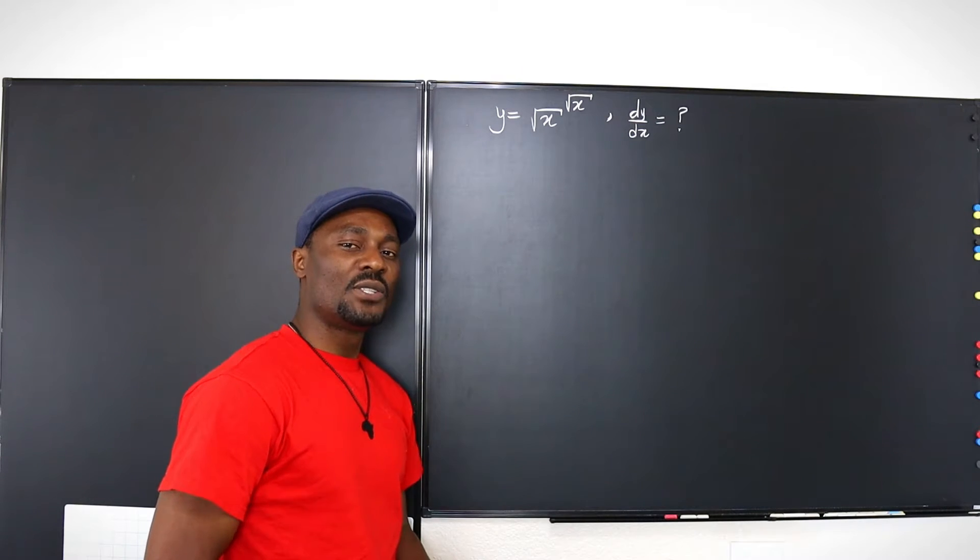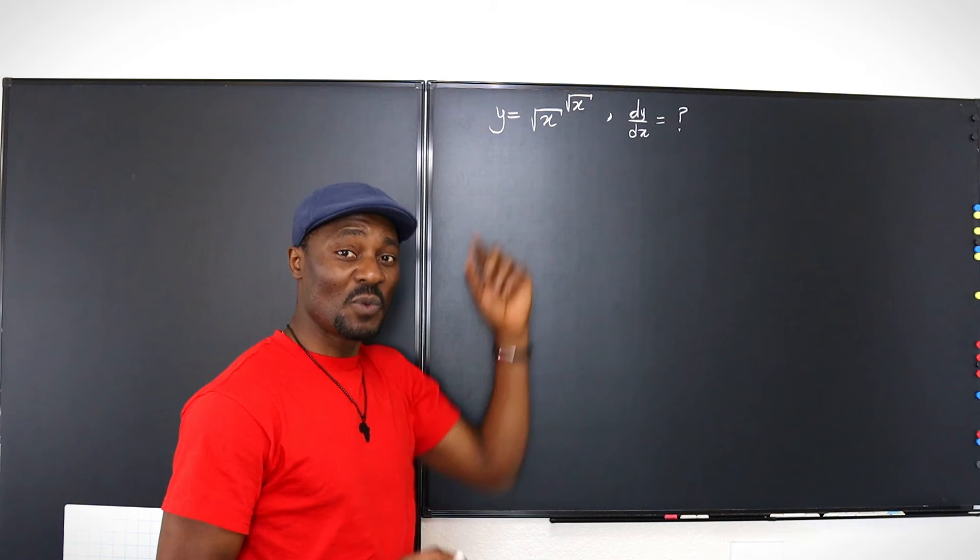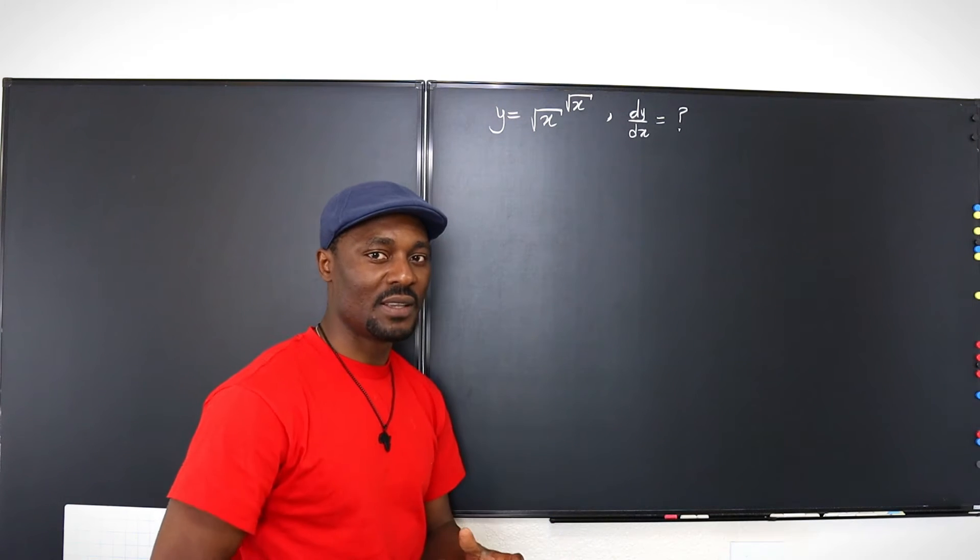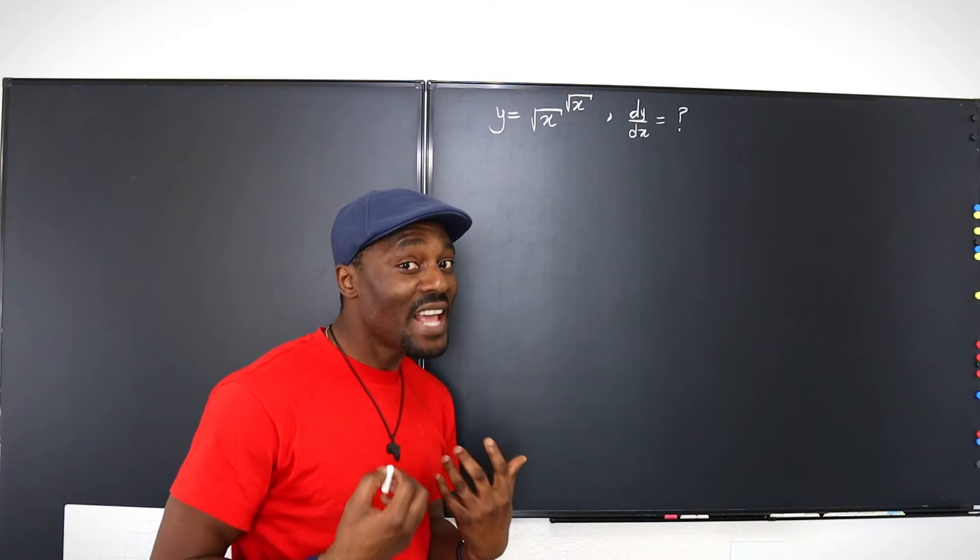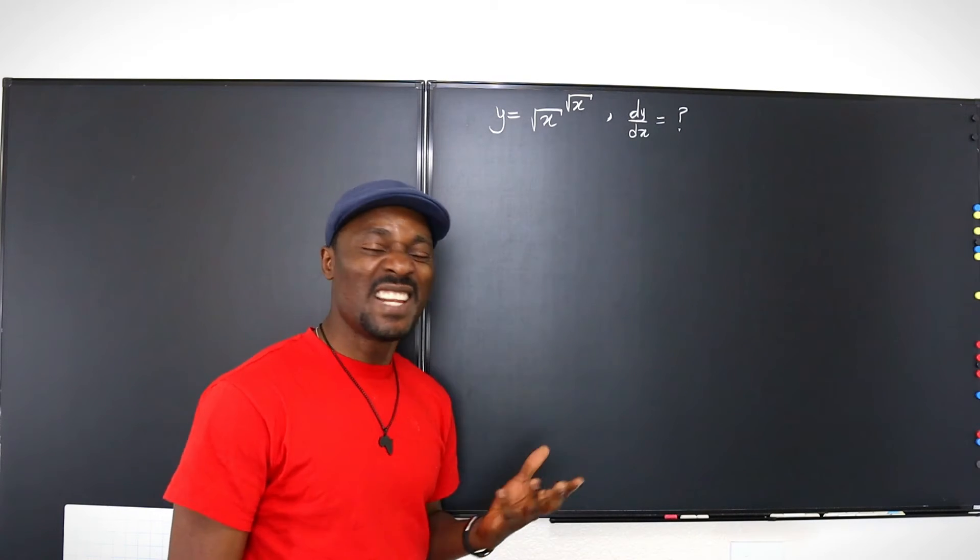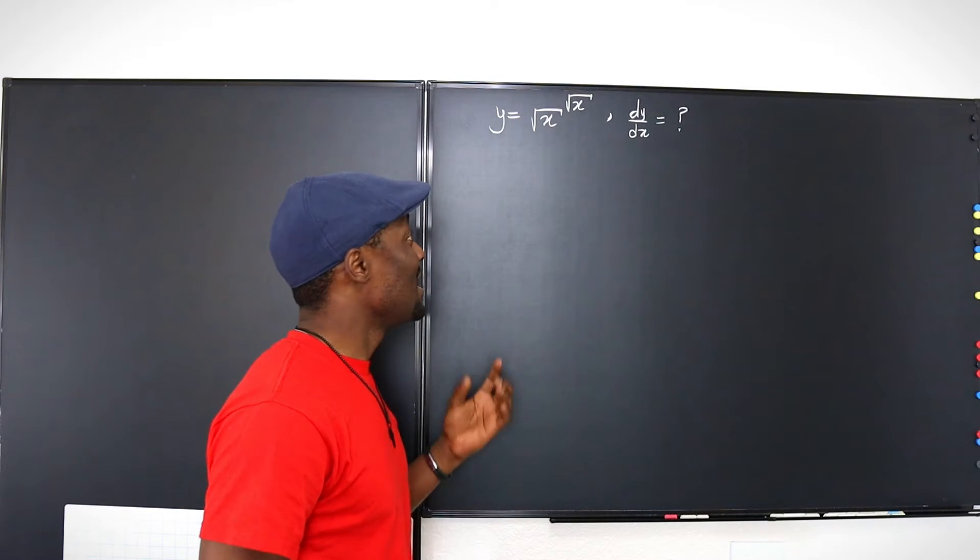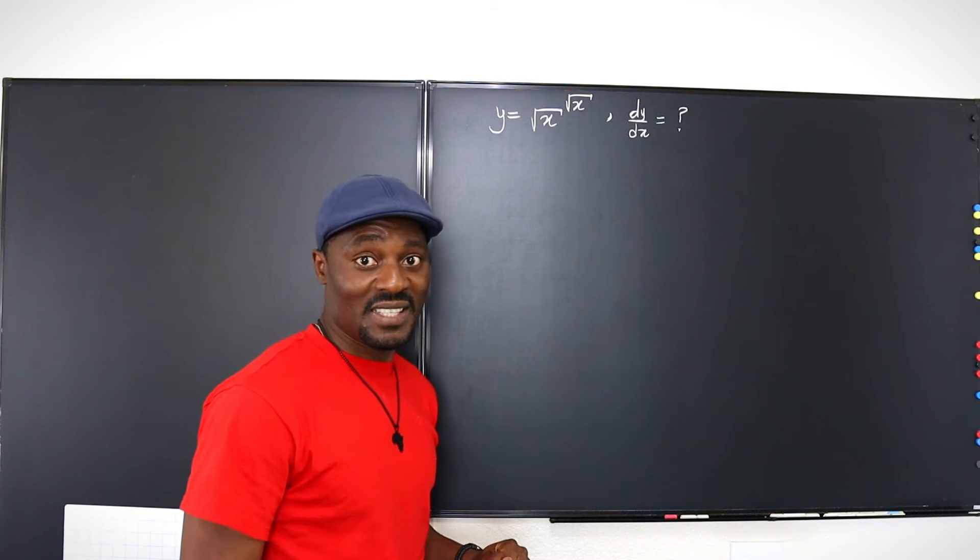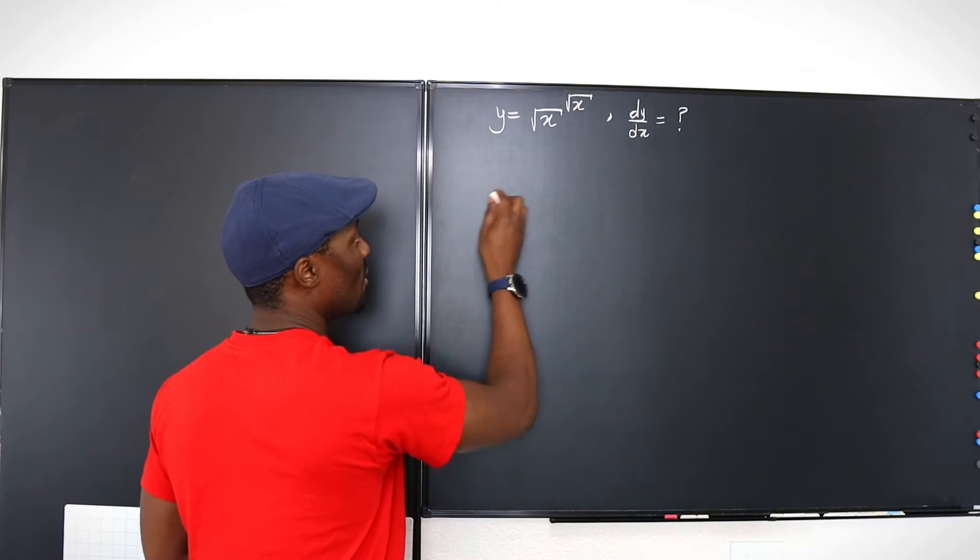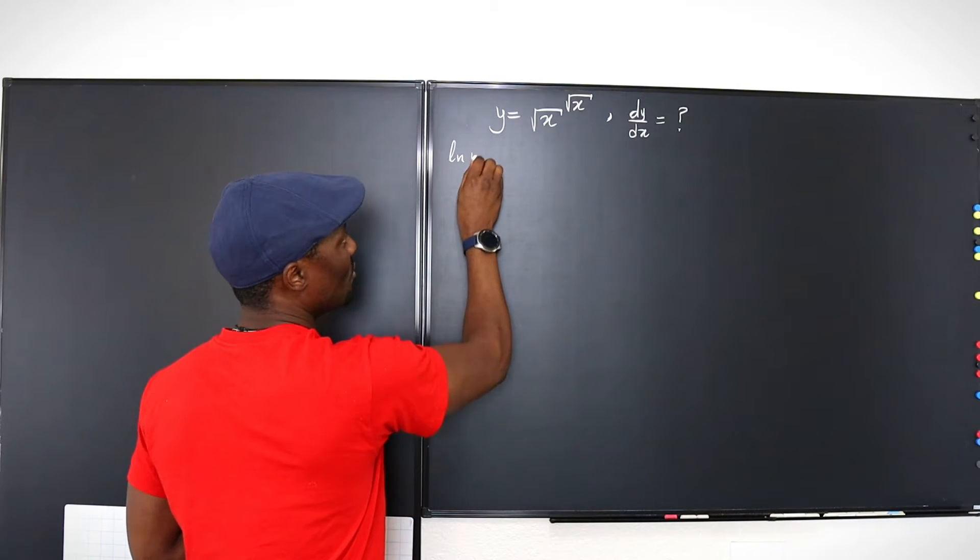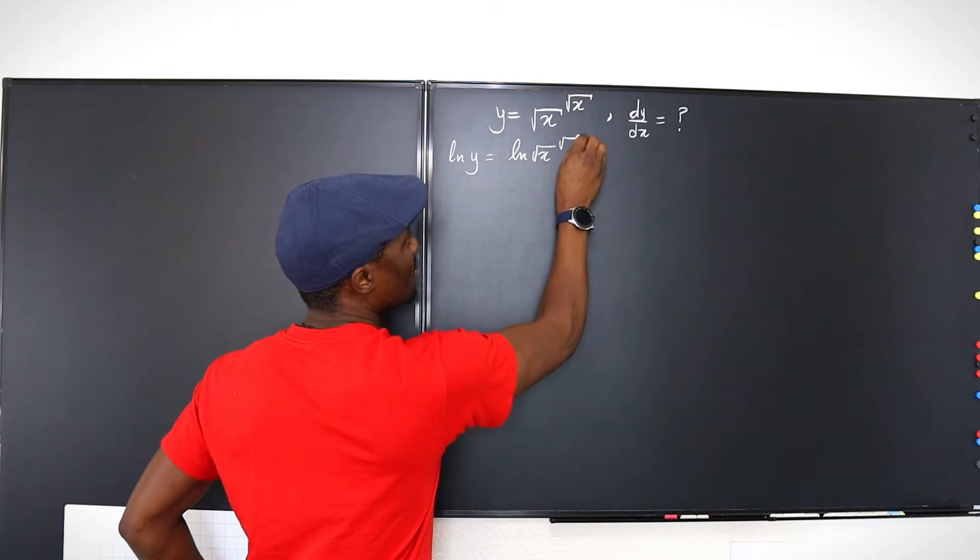Here we have a situation where a function is the power of a function. And when that happens, you want to quickly think of introducing logarithms. And the best logarithm I think you should introduce is natural log because it's easy to work with. So I'm just going to introduce natural log, take the natural log of both sides. I'm going to say ln(y) equals ln of square root of x to the square root of x.